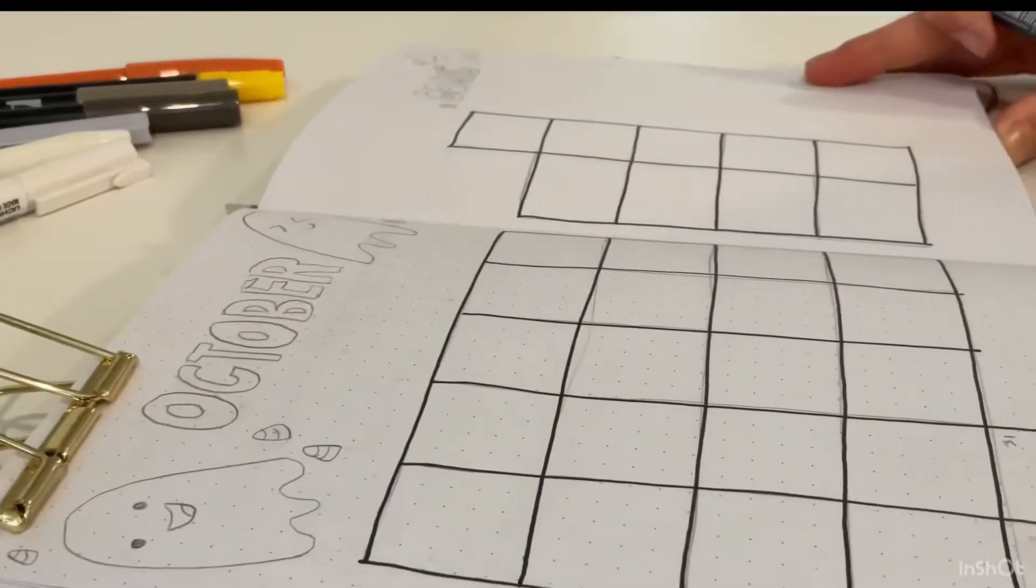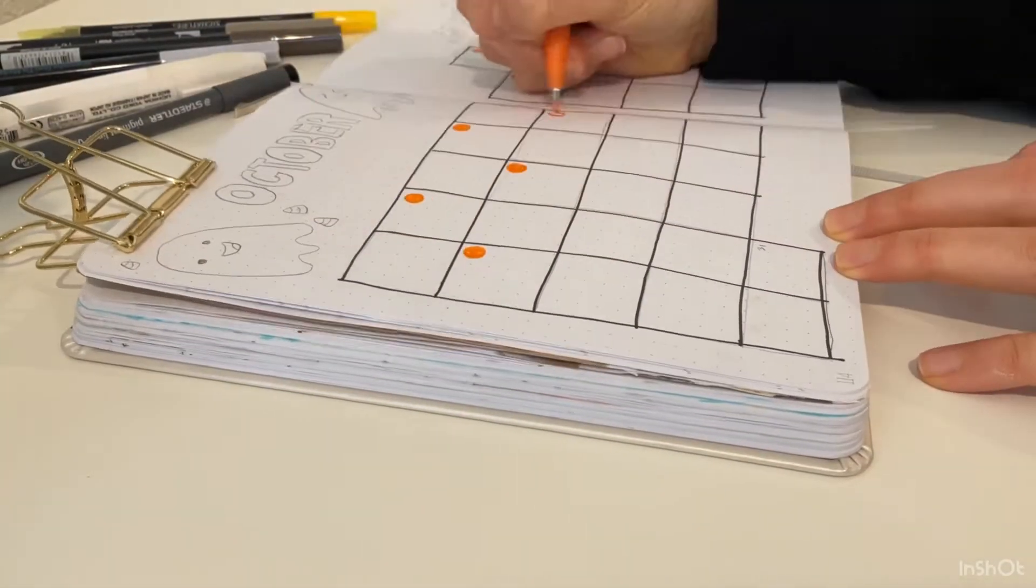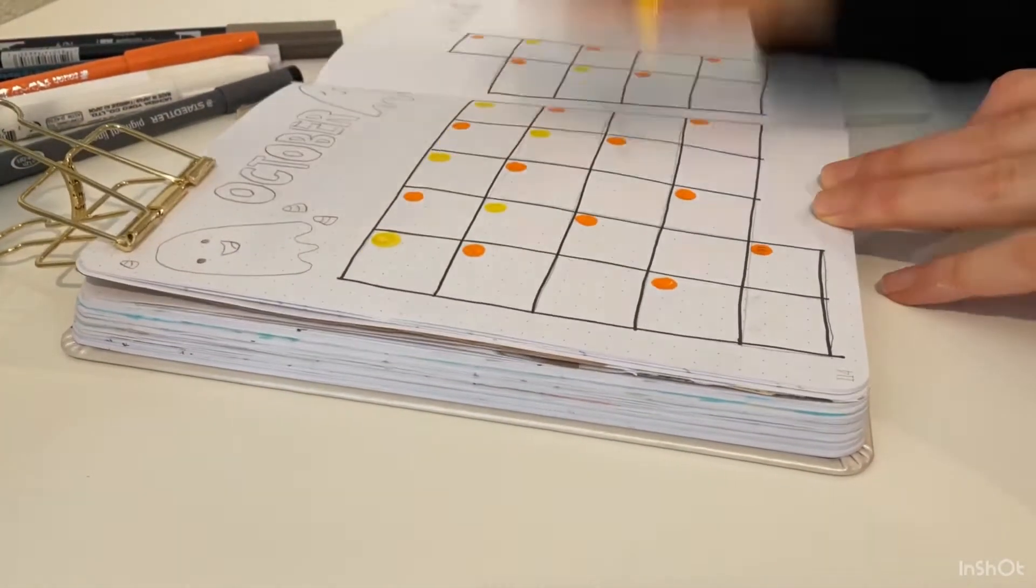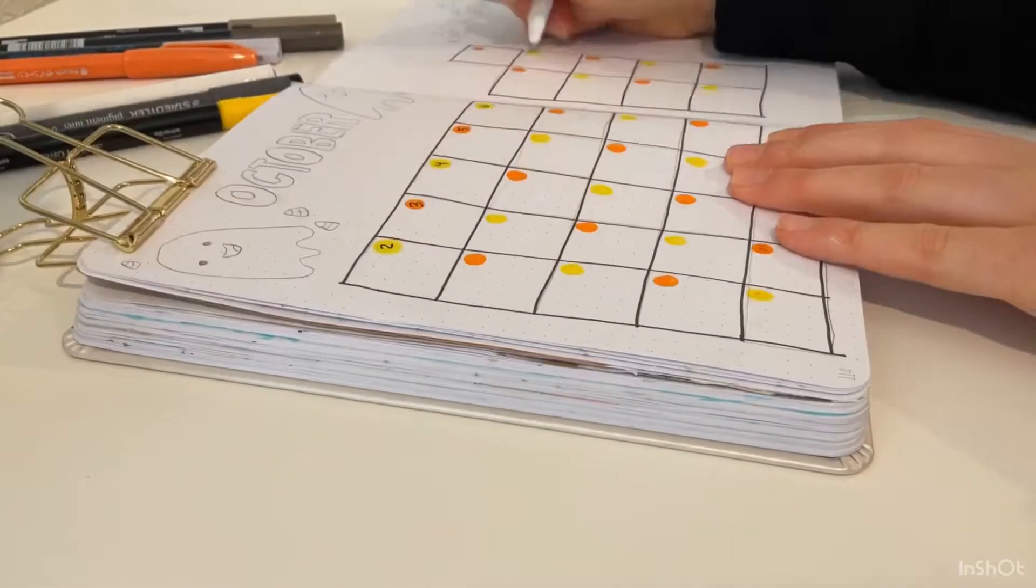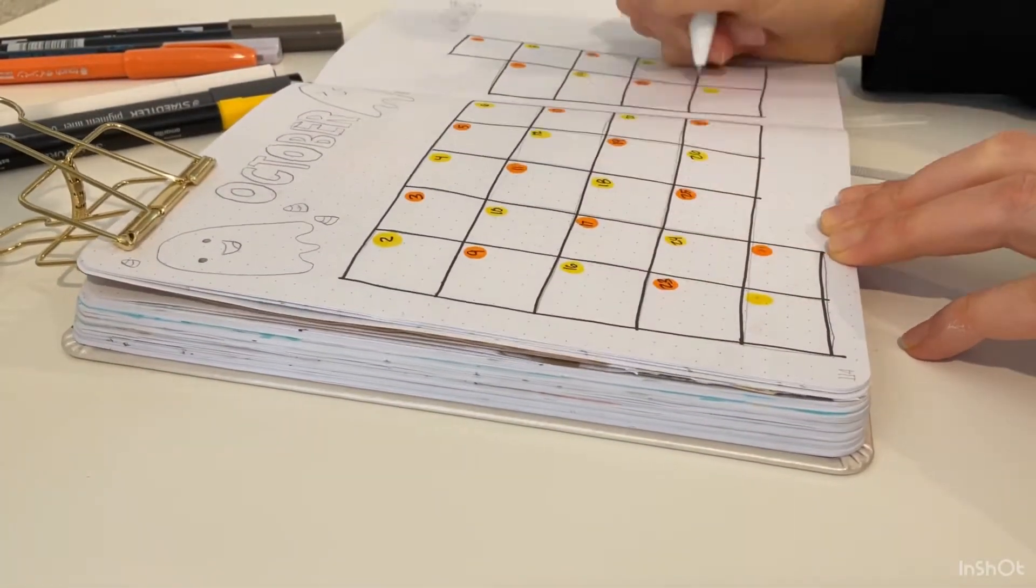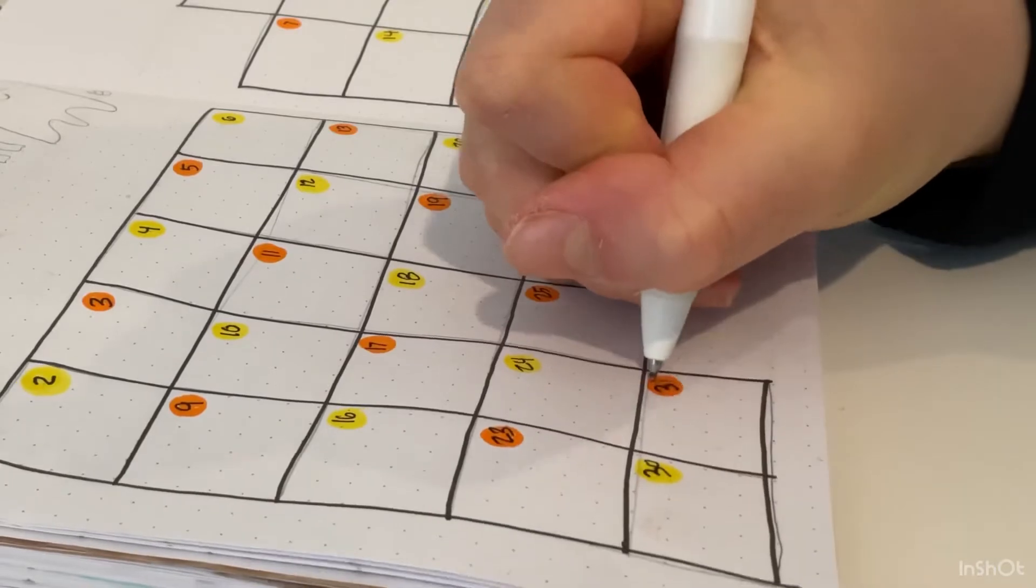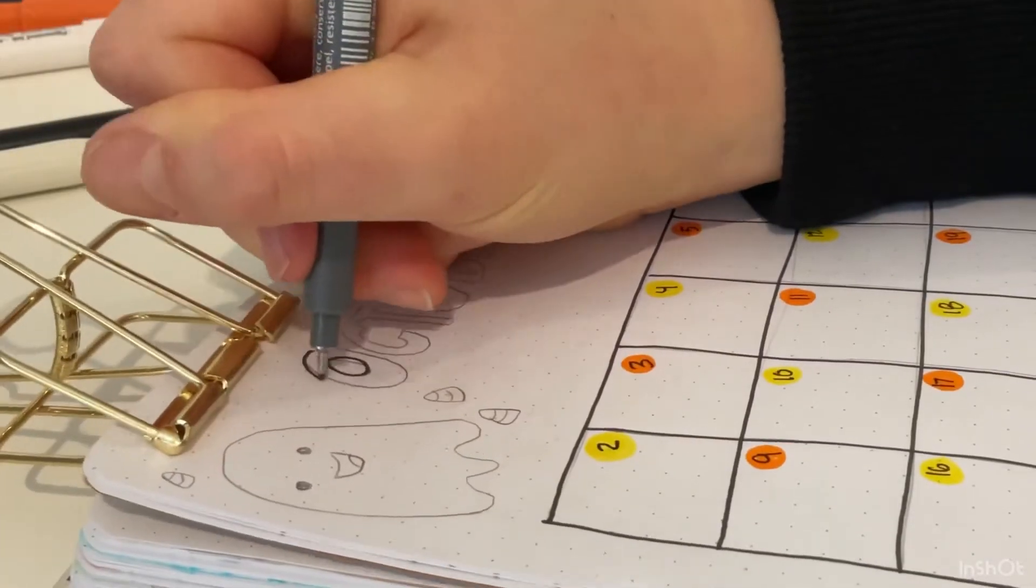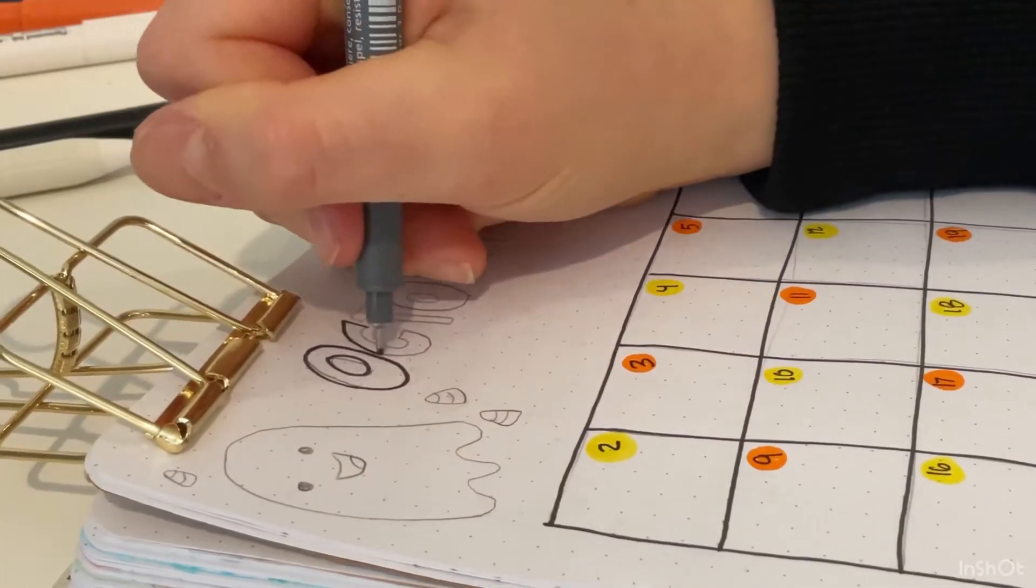Now that I have finished the calendar, I'm going to go ahead and add some orange dots just to write the numbers of the calendar on. I love alternating the colors just to spice it up a little bit more. Once I've done that, I'm going to add an October header at the top of this page.